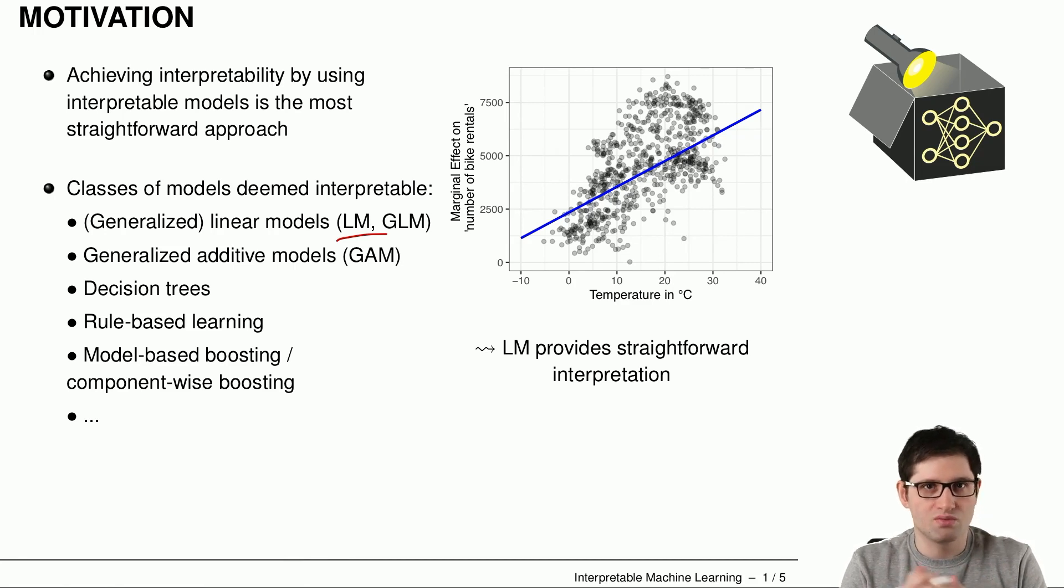Some of these models, we will look at them in more detail in the next sessions. On the right-hand side, we have just an illustration of the linear regression model, which shows a straight line. This is an example of the bike sharing dataset. We have linked on our webpage the short description of this dataset, where the aim is to predict the number of bike rentals based on some weather information and time-dependent information.